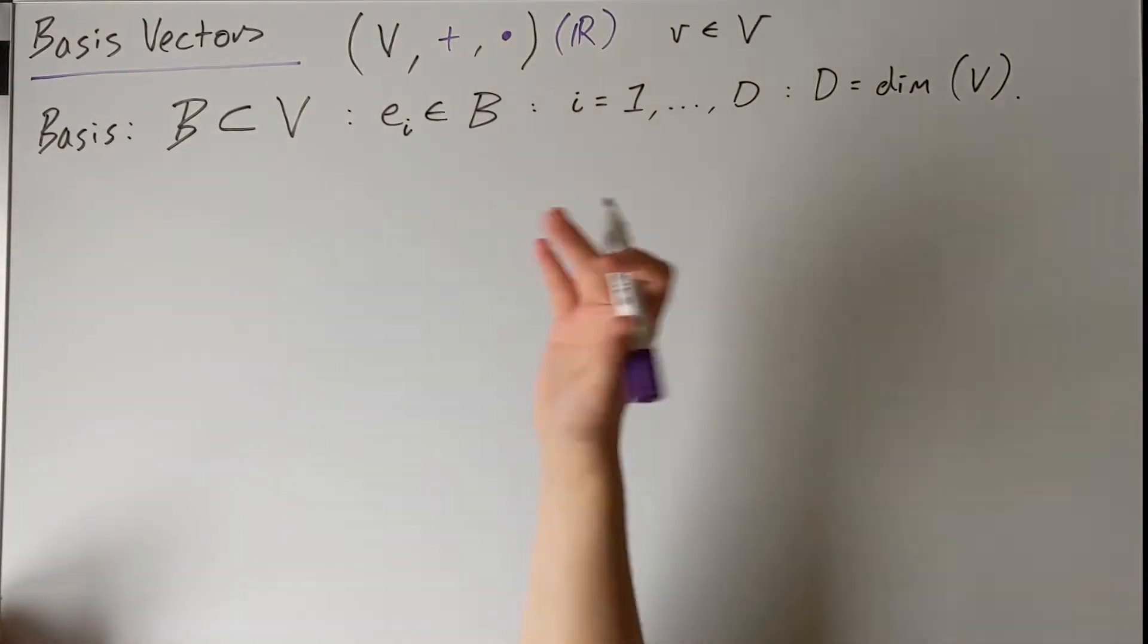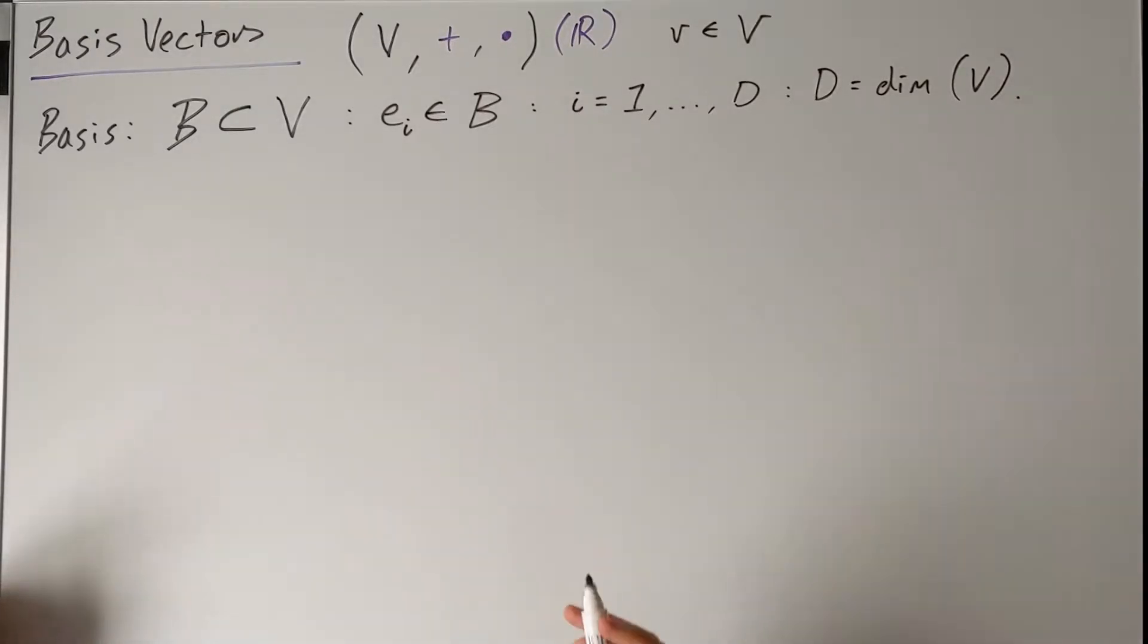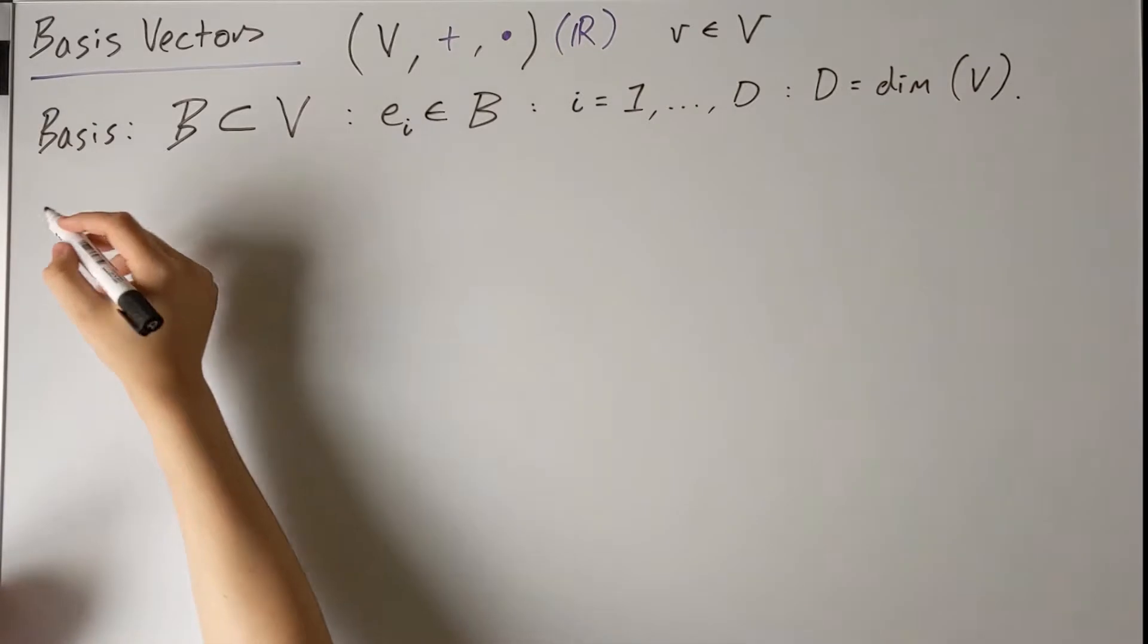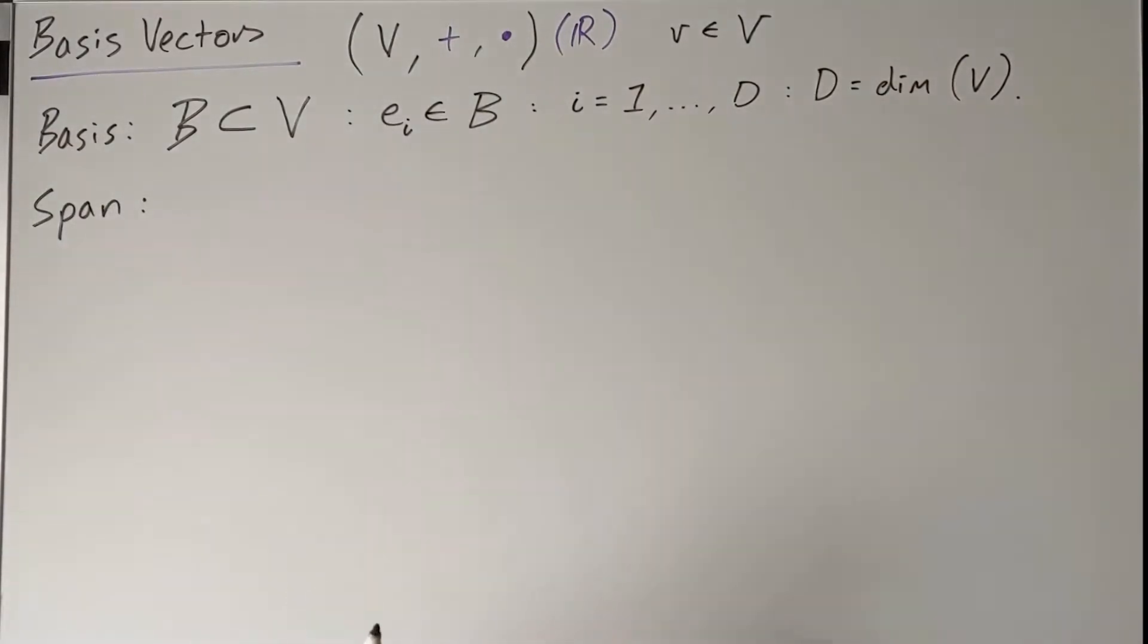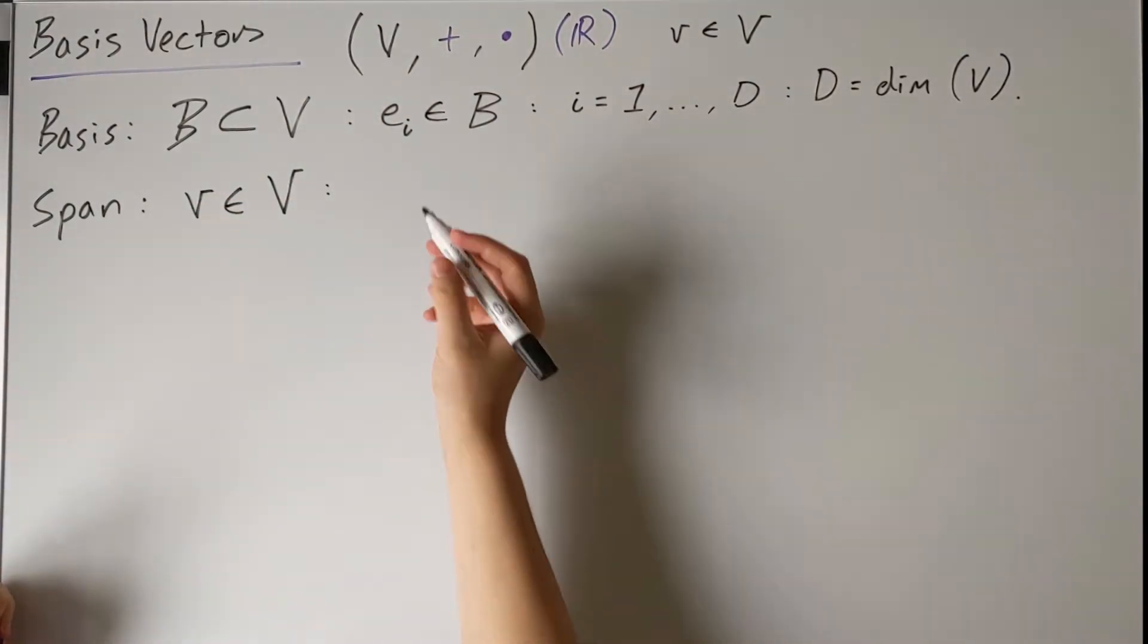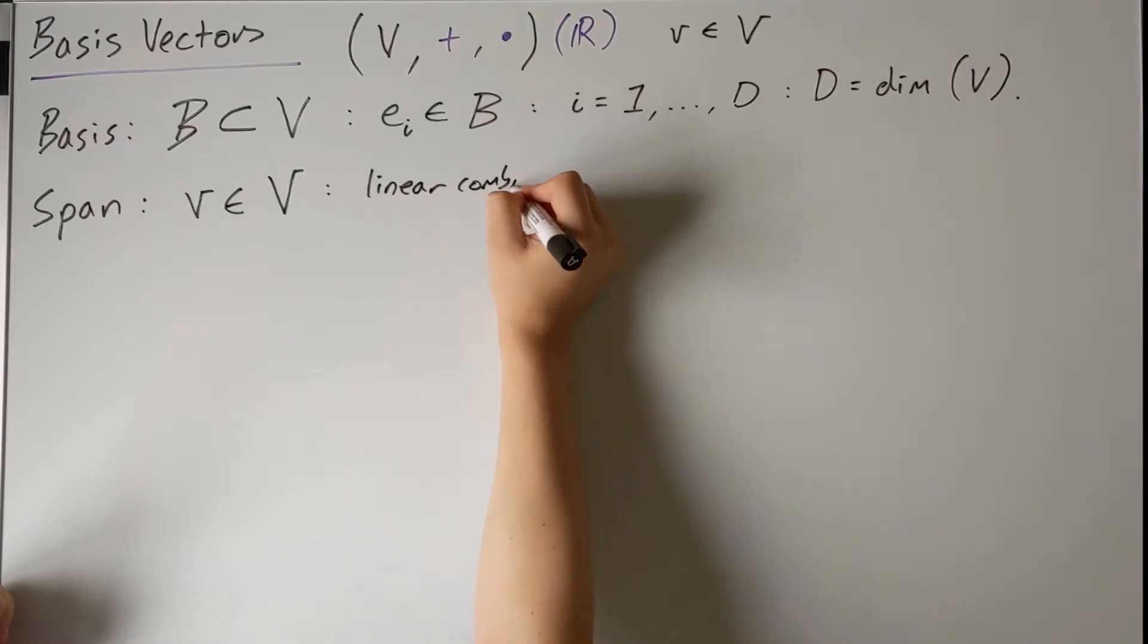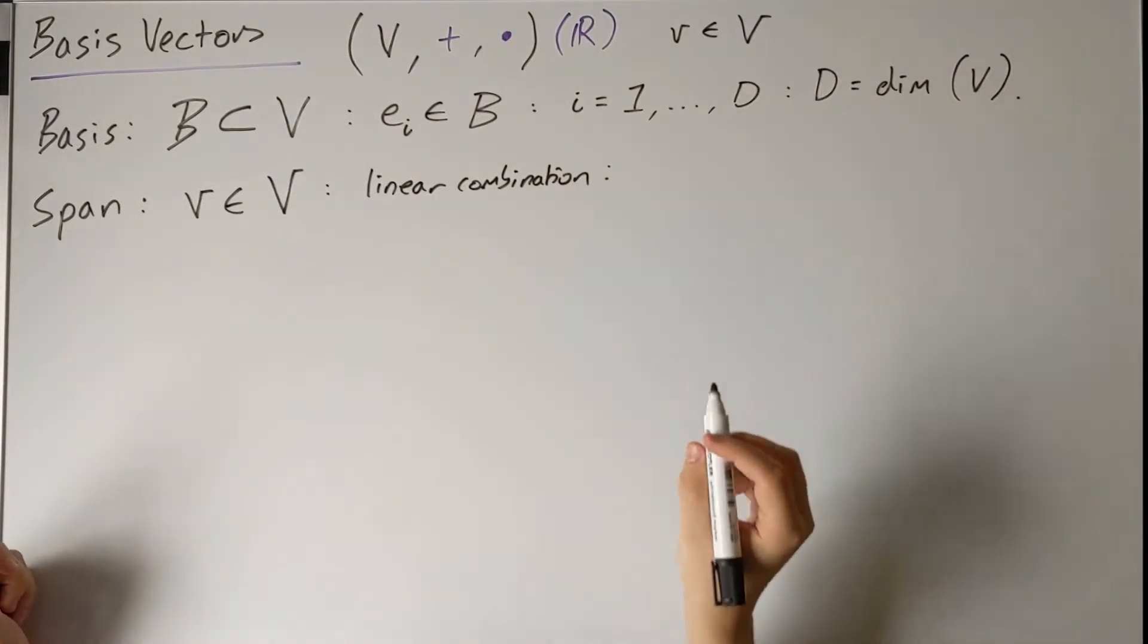Well, these basis vectors, they are vectors as they live in the space V. These basis vectors are special in that they so-called span the vector space. What this means is that any vector in V can be expressed as a so-called linear combination. A linear combination of these basis vectors. So what does this mean, and how do we construct this?